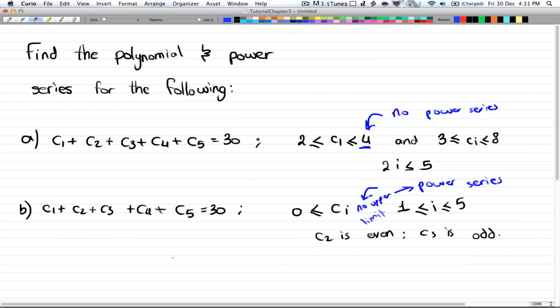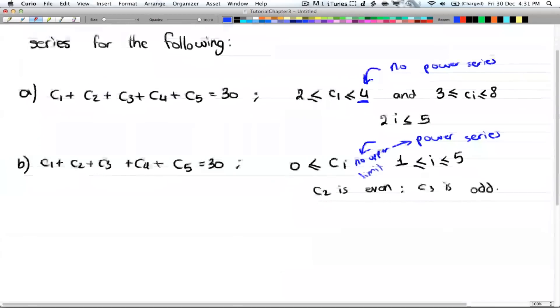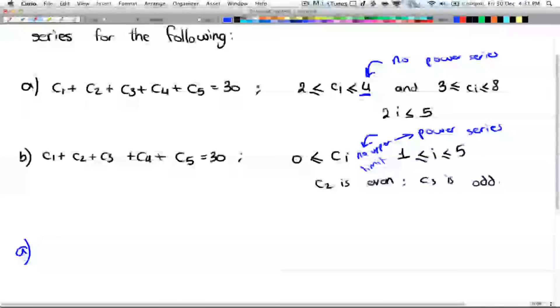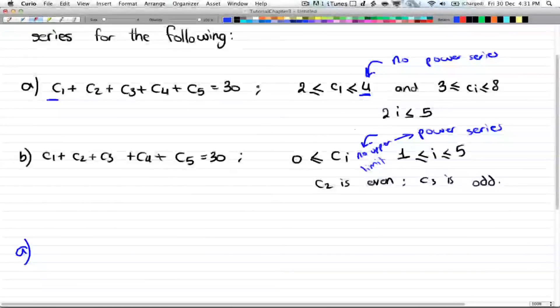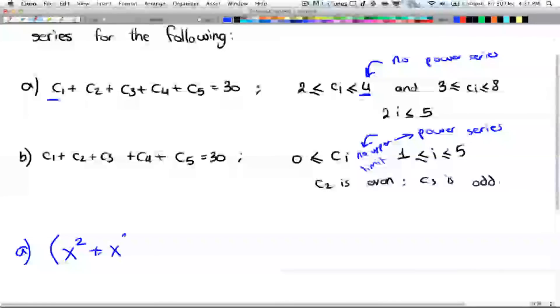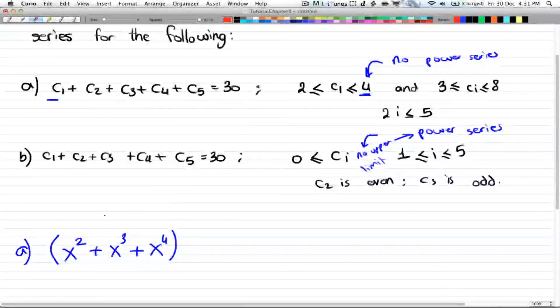Okay, so how do you translate this into generating functions? So you have C₁ + C₂ + C₃ + C₄ + C₅ equals 30. And our conditions are C₁ is between 2 and 4, and every other Cᵢ is between 3 and 8. All right, no problem. So for A, you have C₁ is between 2 and 4. So for C₁, you can select it twice, or 3 times, or 4 times. And that's our C₁ term.